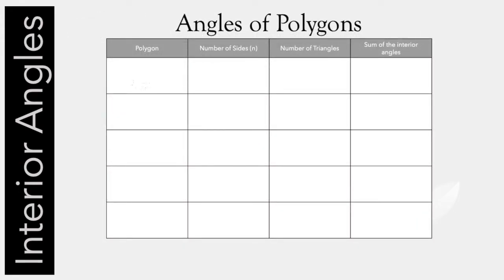We'll start with a triangle. A triangle has three sides, and it's just a triangle, so we already know that the sum of the interior angles of a triangle is 180 degrees.